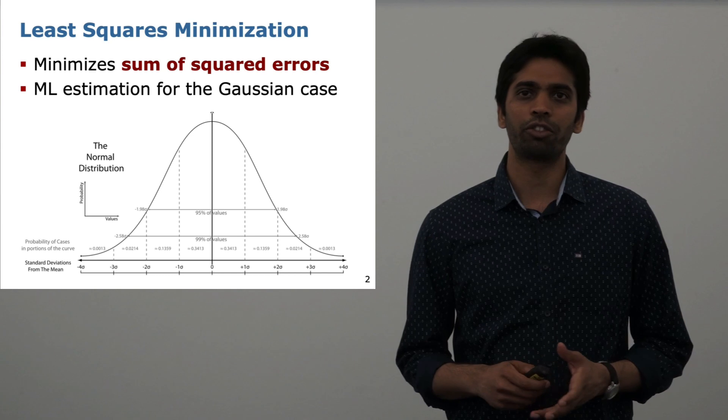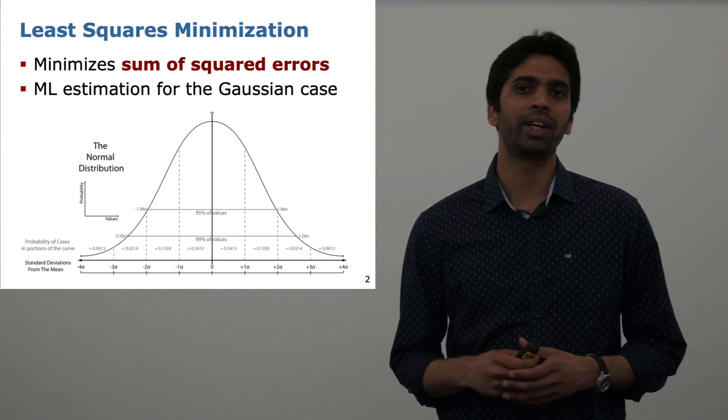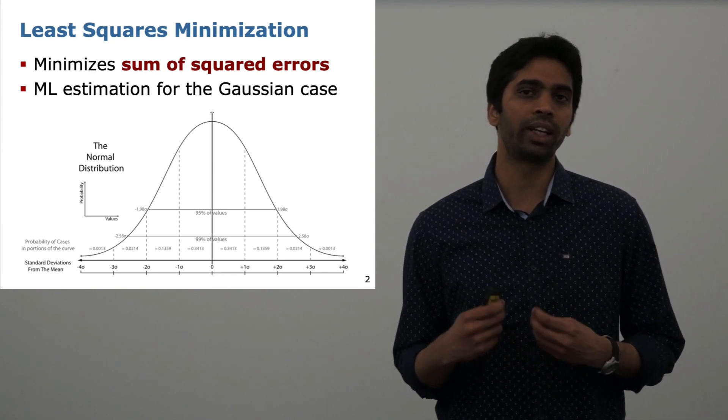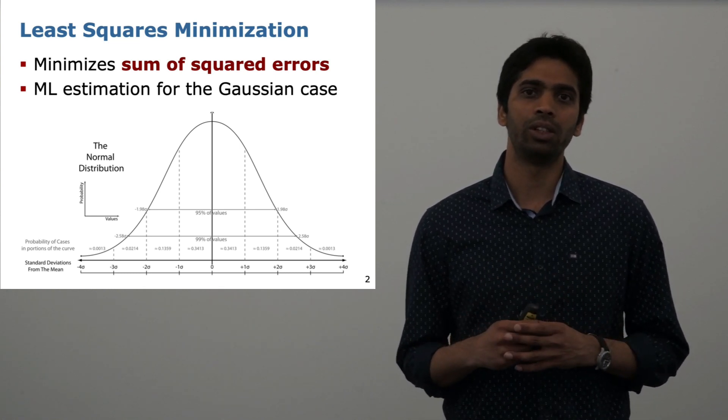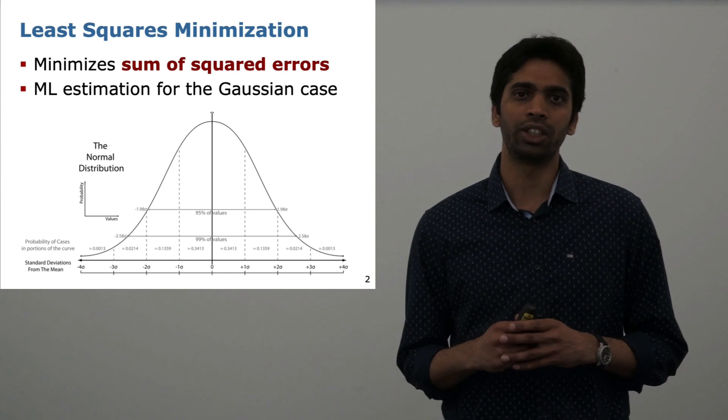Least squares minimization is one of the most popular approaches to estimate parameters from measurements or data collected. Least squares usually results in the maximum likelihood solution if the data is Gaussian distributed.